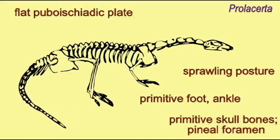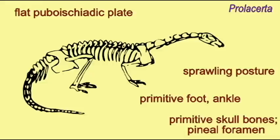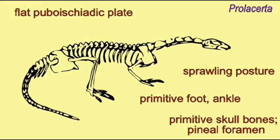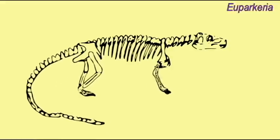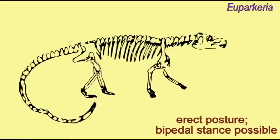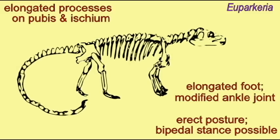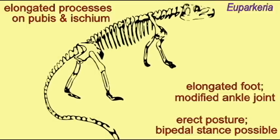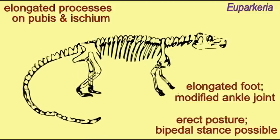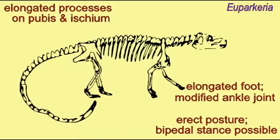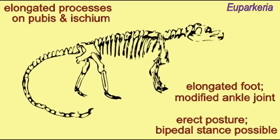The hip bones were modified so that the flat pubo-ischiatic plate of the ancestral reptiles developed those processes on the pubic and ischium bones. The ankle was slowly modified and the two large bones were moved to attach to the bones of the lower leg. The joint was modified so that it would only flex and extend and the joint would occur beneath those two prominent bones. The feet would be elongated so that the toes bore most of the body's weight in typical locomotion.